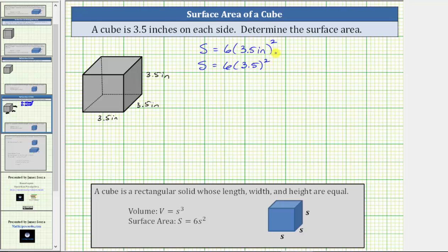Following the order of operations, we first square 3.5, which is 3.5 times 3.5. Before multiplying, notice how the first factor has one decimal place, and so does the second factor. And because one plus one is equal to two, the product must contain two decimal places.